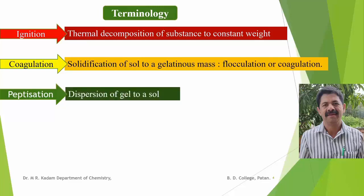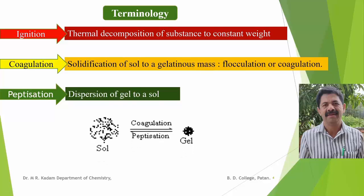The next term is peptization, which is opposite to coagulation. In peptization, the gel or gelatinous mass is dispersed to form the colloidal solution, that is SOL. These two terms can be represented diagrammatically: SOL, that is a fine particle solution, on coagulation gives gelatinous mass or gel. And this gel on peptization gives the SOL, that is, dispersed particles of the precipitate forming a colloidal solution.